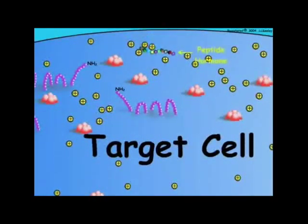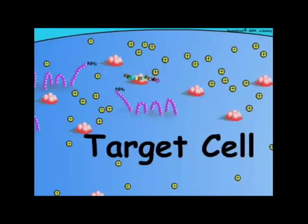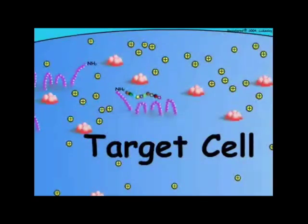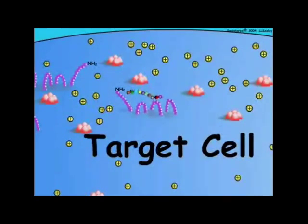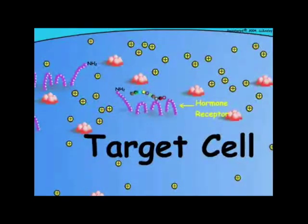Peptide hormones generally consist of short chains of amino acids. Because peptide hormones are often quite short, they lack a rigid three-dimensional conformation and are flexible. Peptide hormones are usually water-soluble and too large to pass through the lipid plasma membrane of their target cells. Therefore, peptide hormones interact with a cell surface receptor that has an exposed extracellular hormonal binding site.